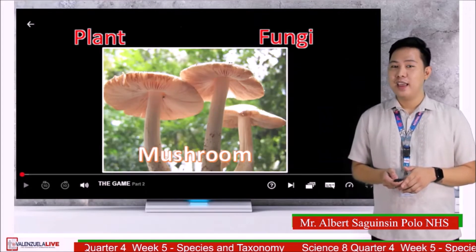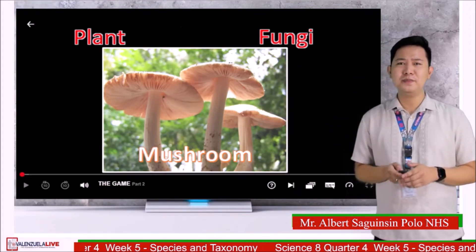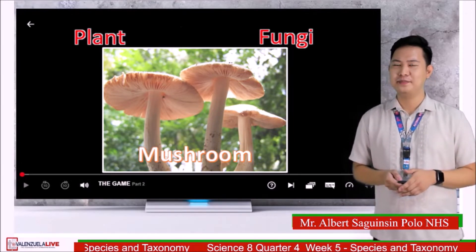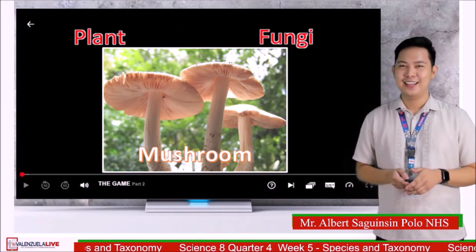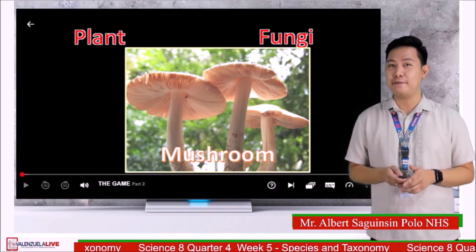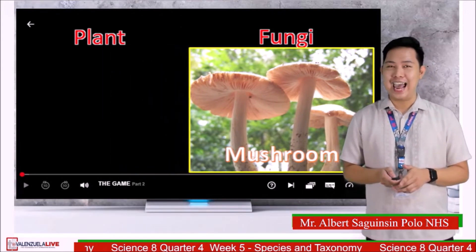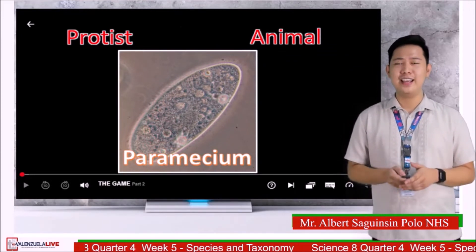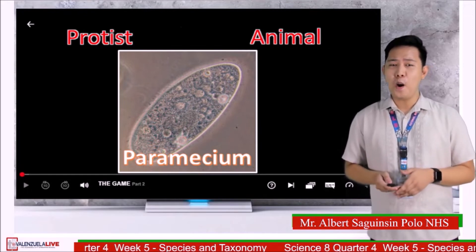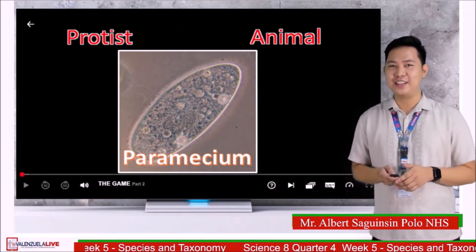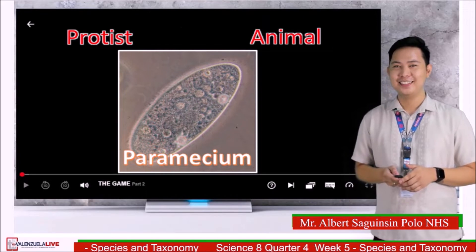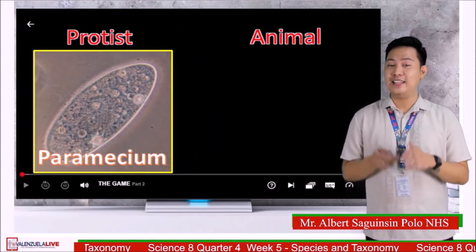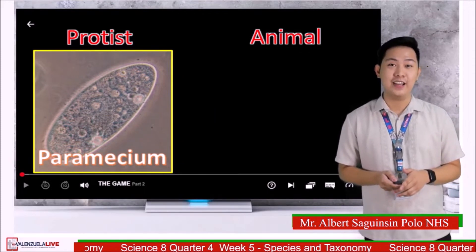Third organism is mushroom. What do you think? Is it a plant or a fungi? Amazing, students — mushroom is a type of fungi. And last organism is paramecium. What do you think — is it a protist or an animal? Comment your answer. Good job — it is a type of protist that is commonly found in dirty, stagnant water.